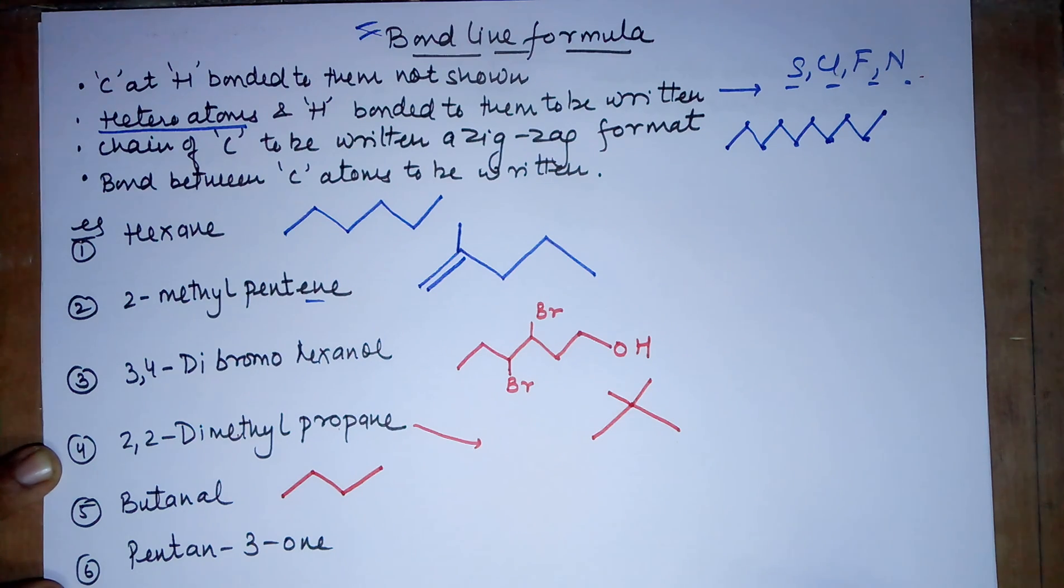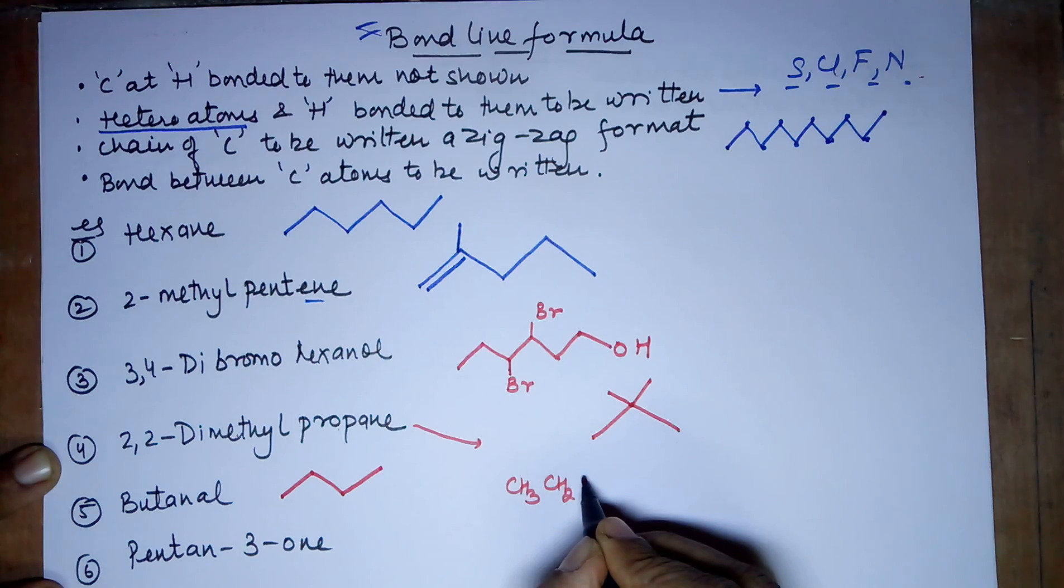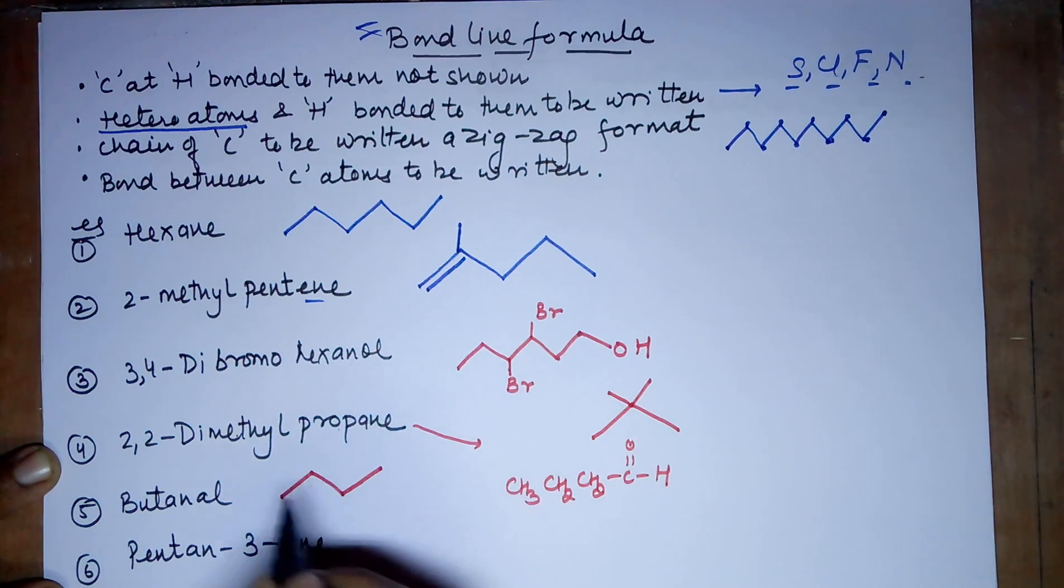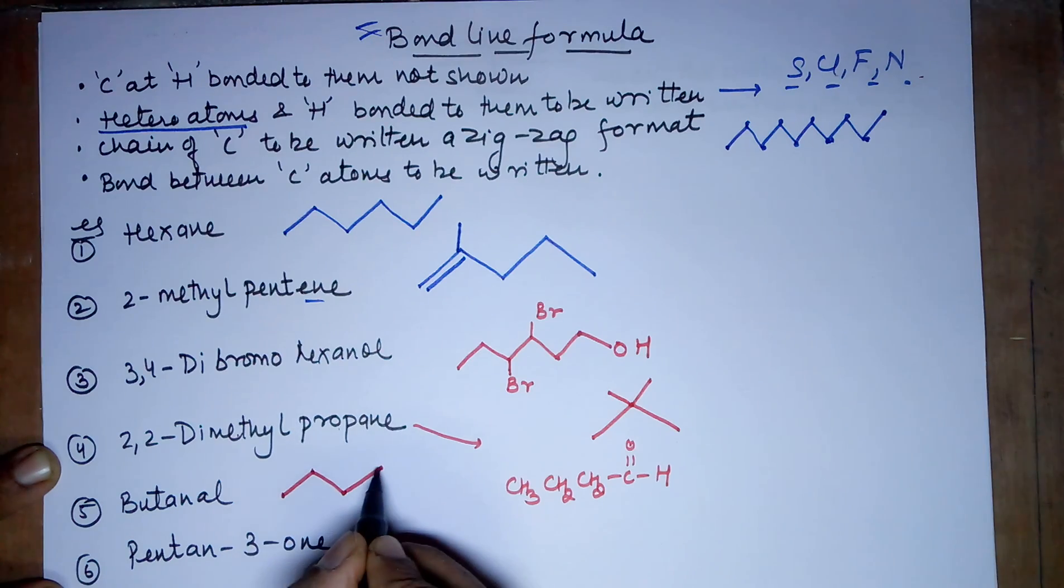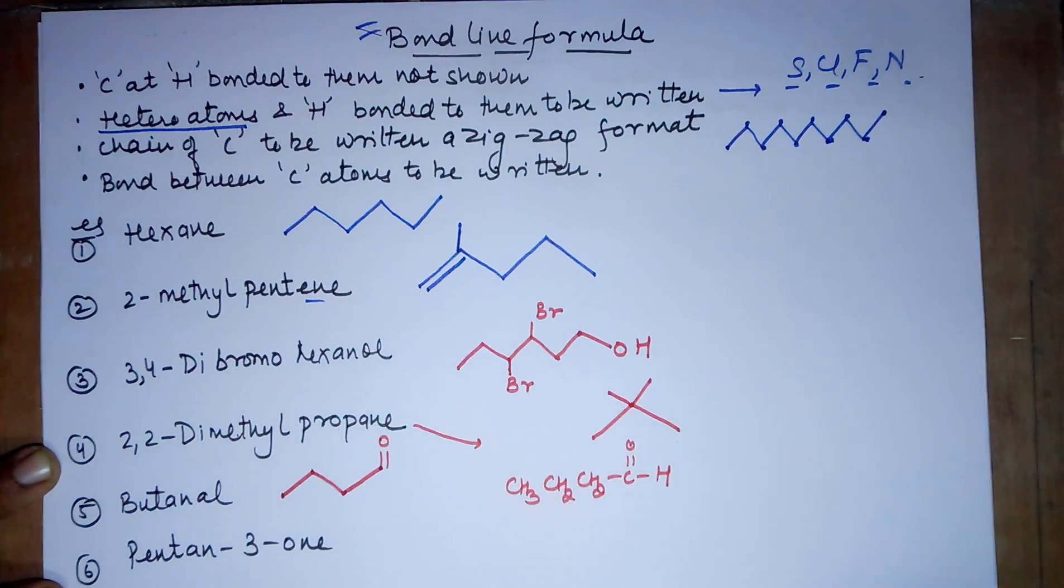Just to give it a little clearer picture, butanal looks like CH3, CH2, CH2, CH2, C double bond O and an H. 1 carbon, 2 carbon, 3 carbon, 4 carbon. The 4th carbon has a double bond O and the H is understood because you are not writing it down. This is how you represent butanal.